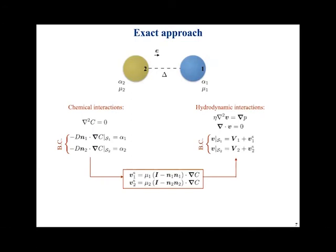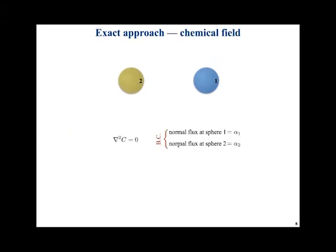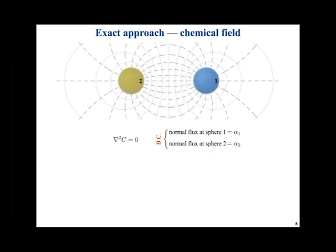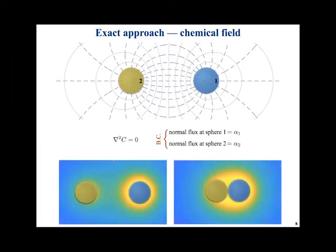Let's solve the chemical and hydrodynamic interactions exactly. Starting with the concentration field, we have the harmonic equation subject to two normal flux boundary conditions. The way to solve this exactly — without any approximation — is to transform the system to bispherical coordinates. This allows us to solve for the concentration field exactly regardless of the sphere sizes or gap size, whether the gap is large or extremely small.